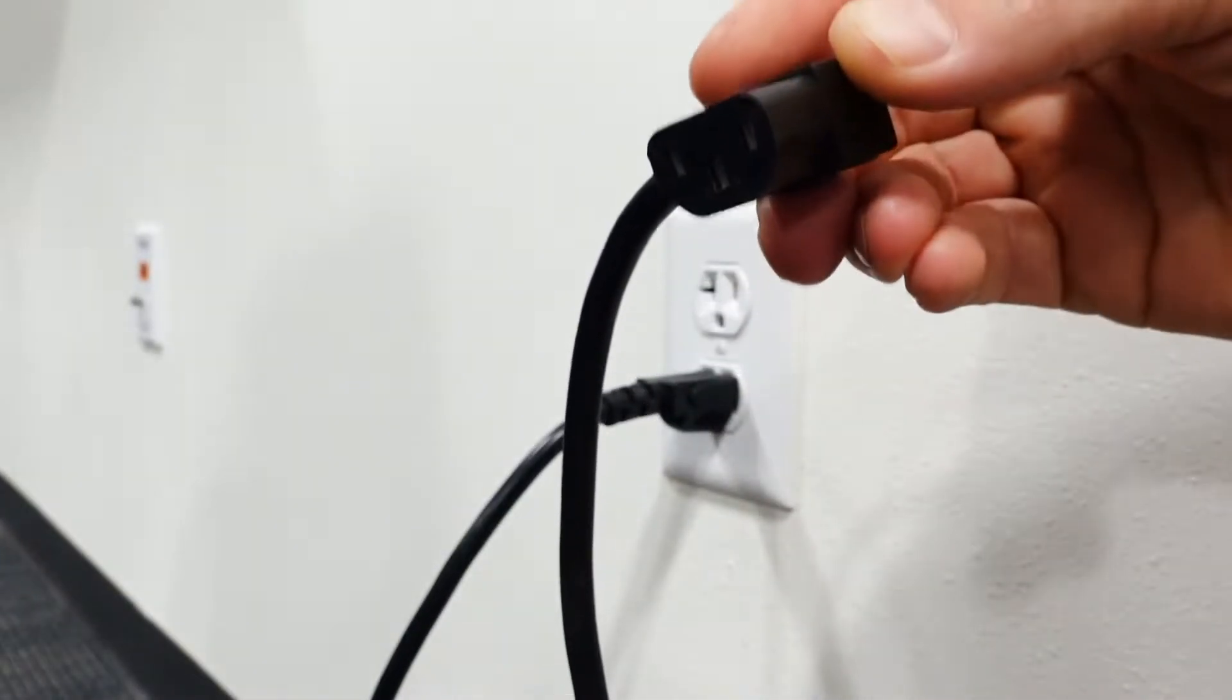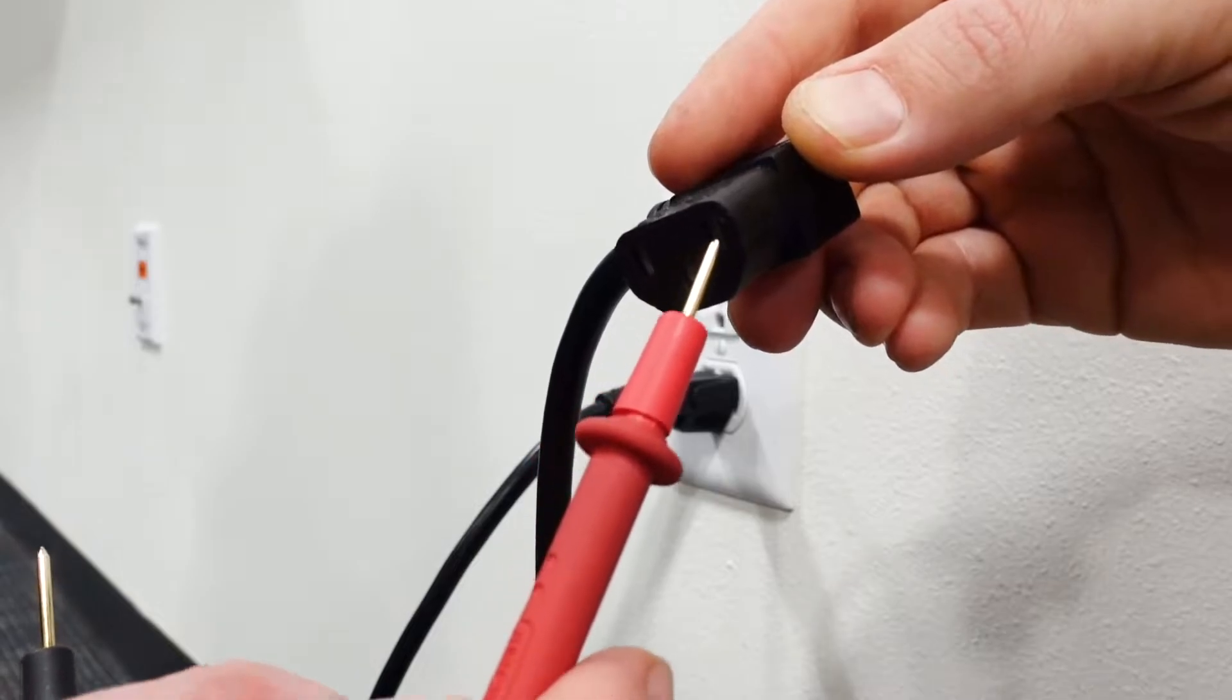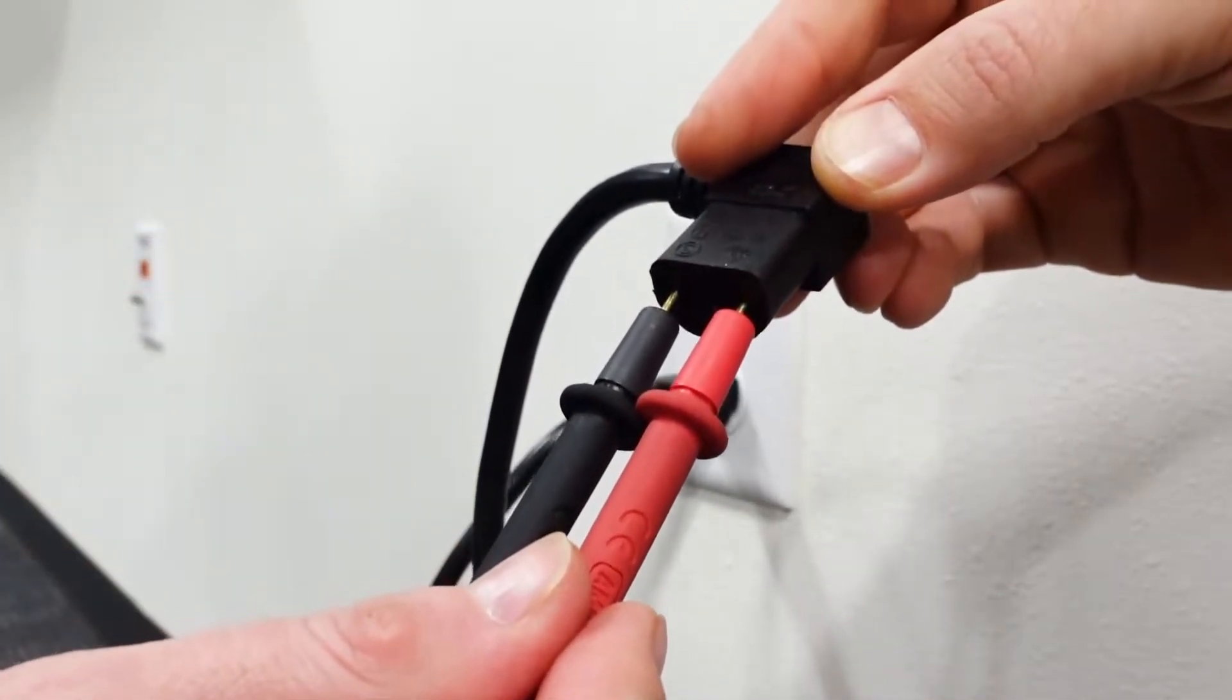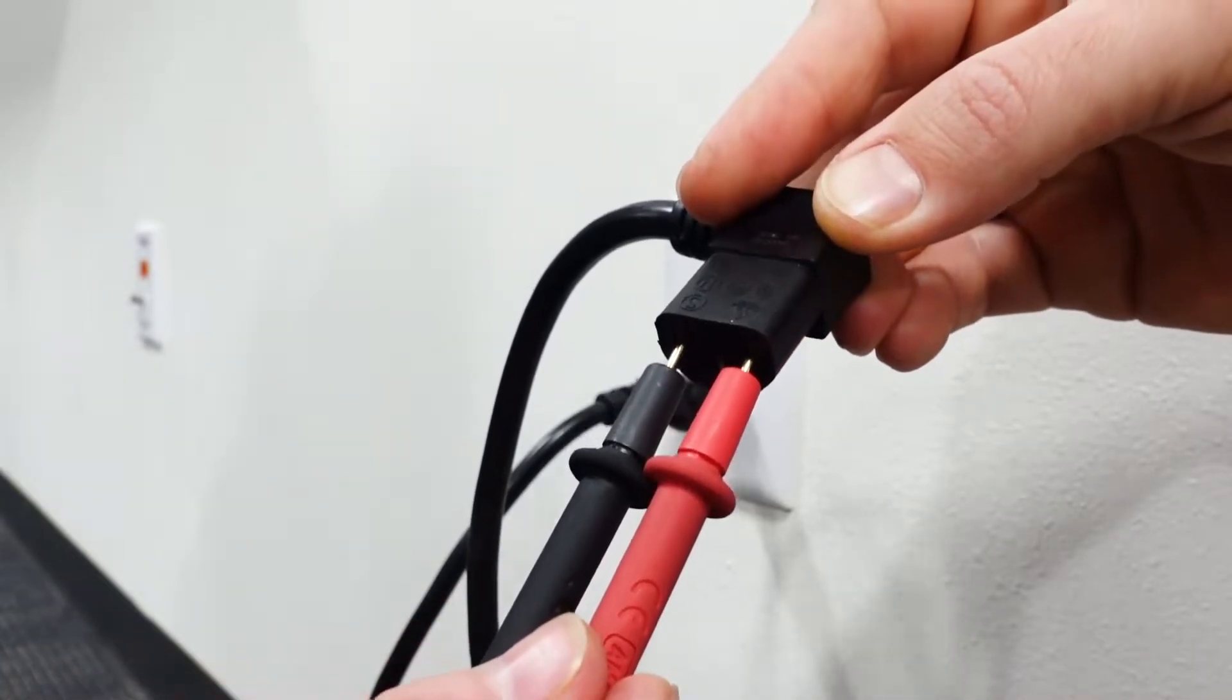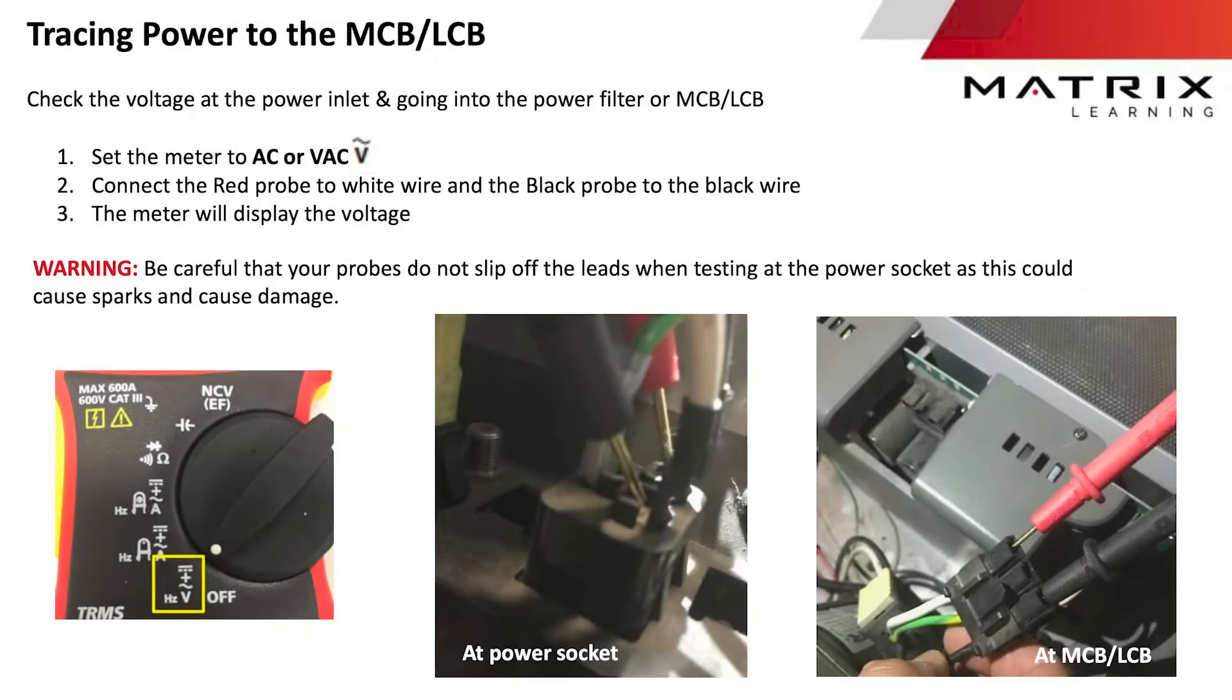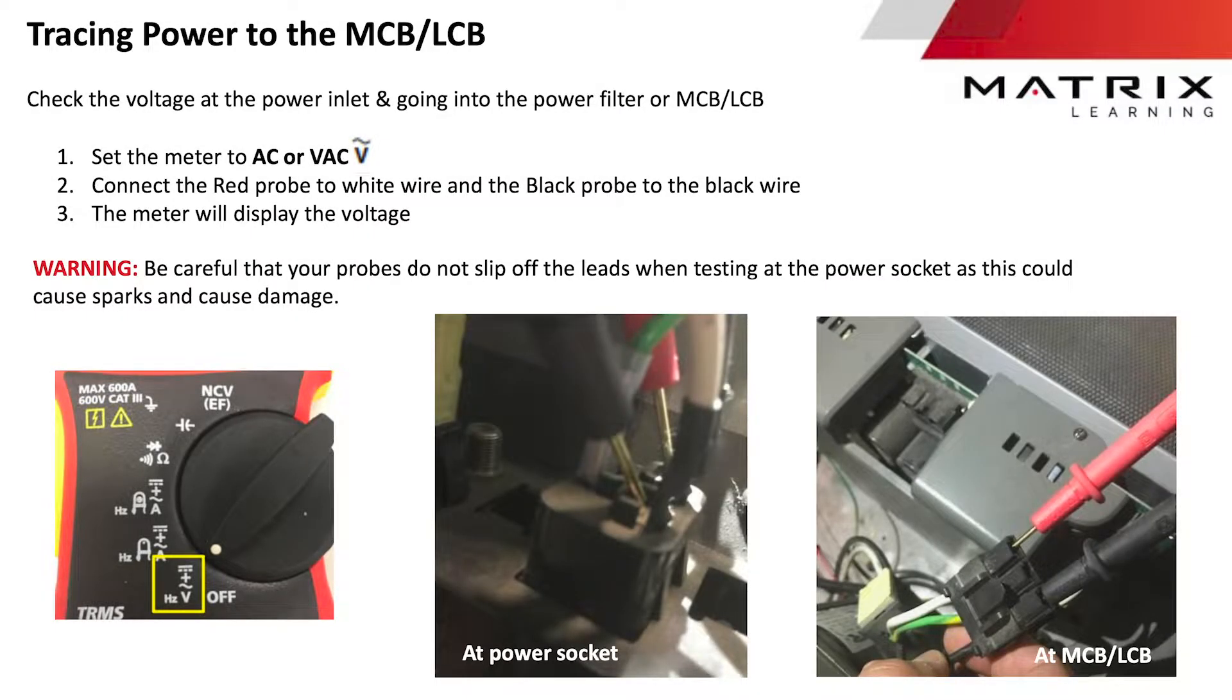You can then use your multimeter to verify the voltage coming through the power cord. Next, we can test the voltage of the power inlet, as well as going into the lower control board.